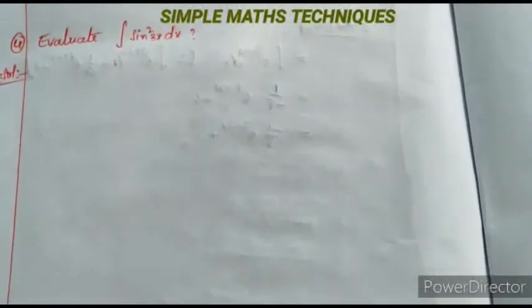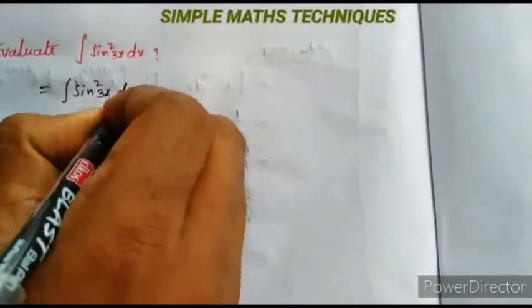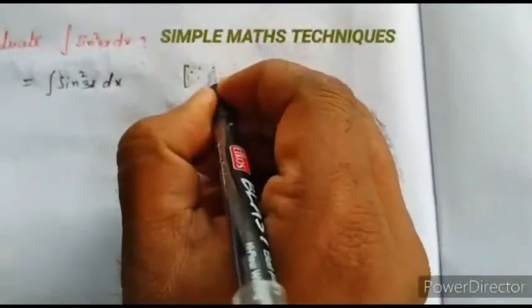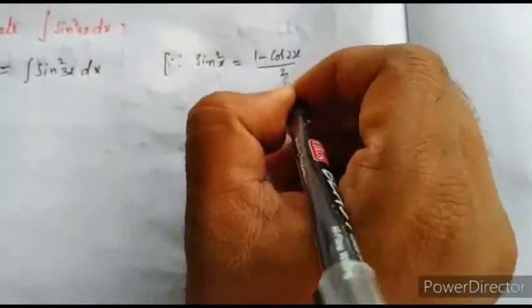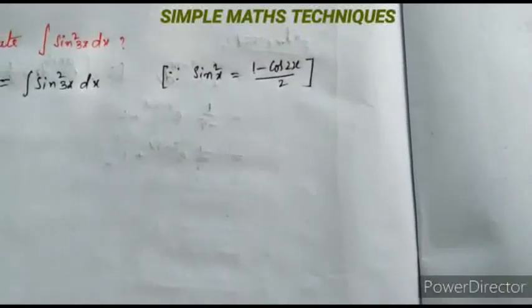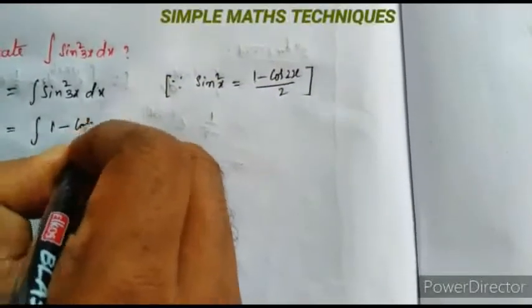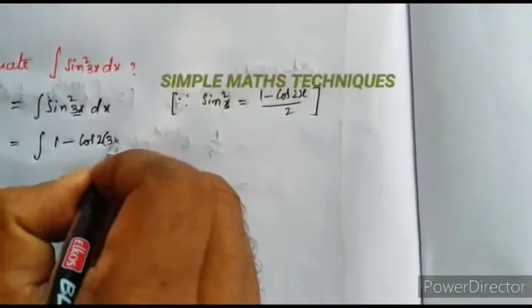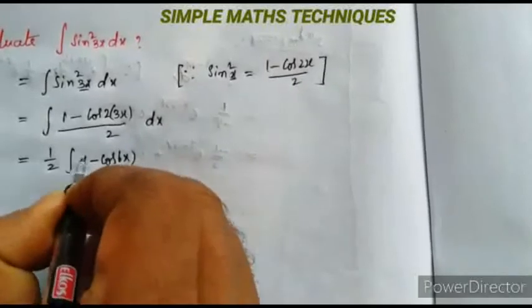The next problem: evaluate integration of sin²(3x) dx. There is no direct formula for sin²(3x) dx. We use the identity: sin²(x) = (1 - cos 2x)/2. So sin²(3x) = (1 - cos 2·3x)/2 = (1 - cos 6x)/2. The integral becomes 1/2 · integration of (1 - cos 6x) dx.